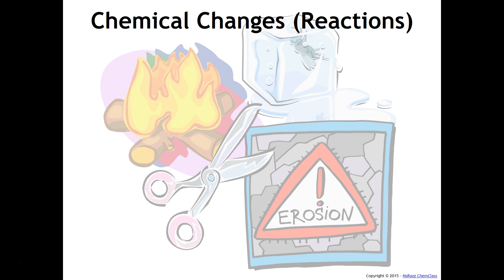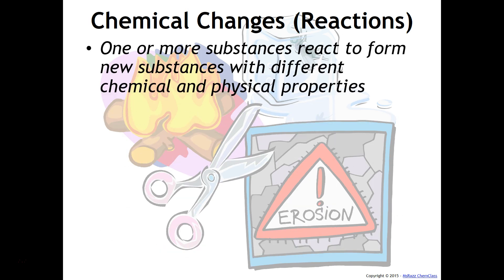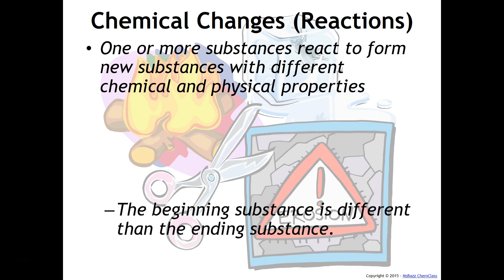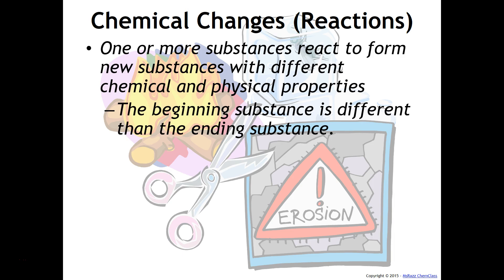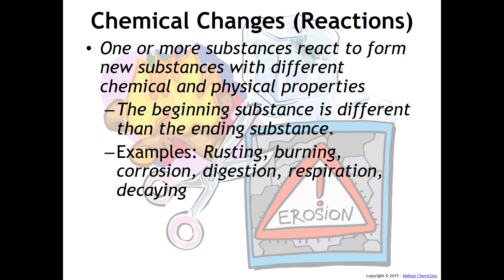Chemical changes, which are also known as reactions, are where one or more substances react to form new substances with different chemical and physical properties. The beginning substance has to be different than the ending substance. Things like rusting, burning, corrosion, digestion, respiration, and decaying are all examples of chemical reactions or chemical changes.